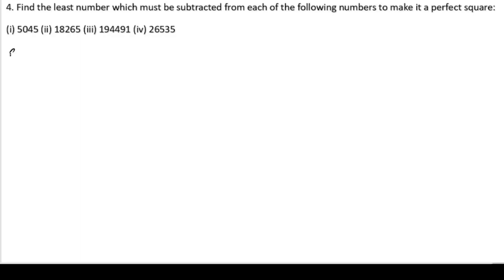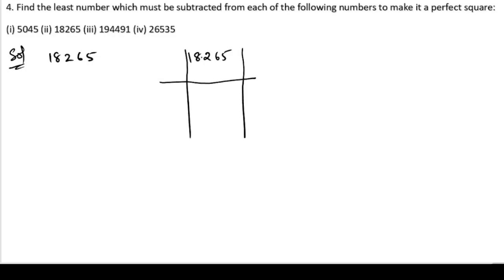The second bit is 118265. We will find the square root of 118265. Take two digits at a time — 1 is left alone. The square of 1 is 1, so we write down 1. One plus one is 2. Subtracting gives 82. Bring down the next pair to get 82.